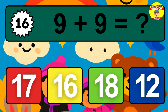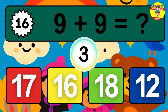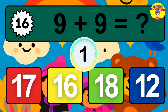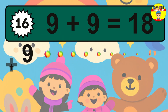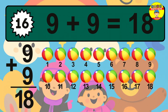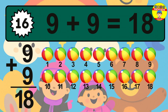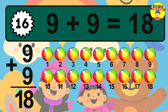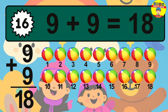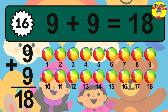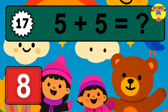Question 16. 9 plus 9 equals what? The answer is 9 plus 9 is 18. Let's count it: 1, 2, 3, 4, 5, 6, 7, 8, 9, 10, 11, 12, 13, 14, 15, 16, 17, 18.